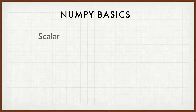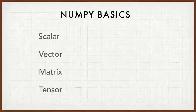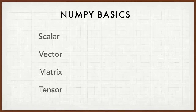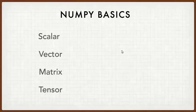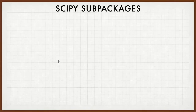Before we start, here's an important interview question: what is a scalar, a vector, a matrix, and a tensor? A scalar is a single value. A vector is a single-dimensional array. A matrix is a two-dimensional array. A tensor is an n-dimensional array. These are the four terminologies you should know when working with numerical libraries like NumPy or SciPy.